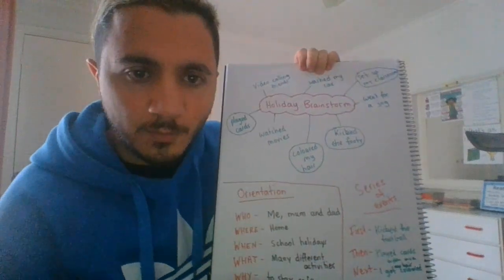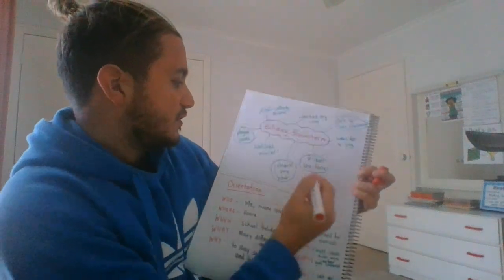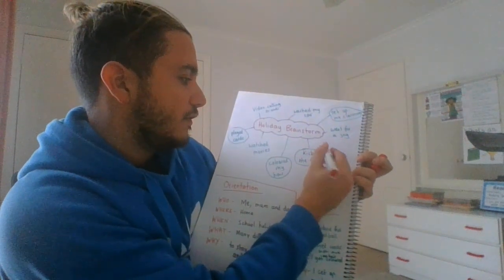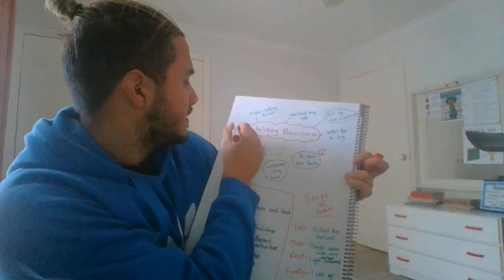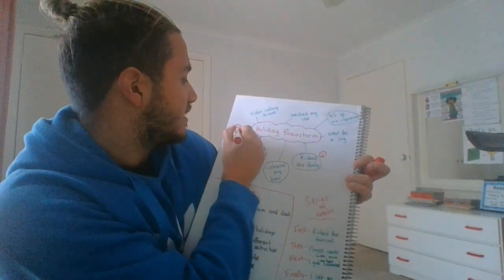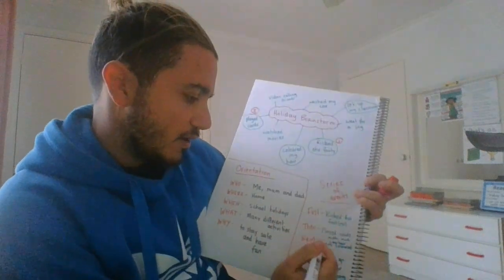Now, if you didn't write it there, I could have just put it on here as well. So, kept the football was the first thing that I did, and then played cards was the second thing that I did, because it needs to be in order when we write a series of events.